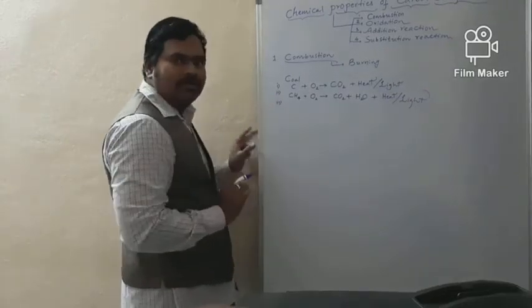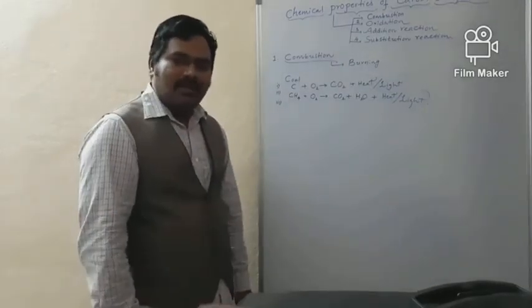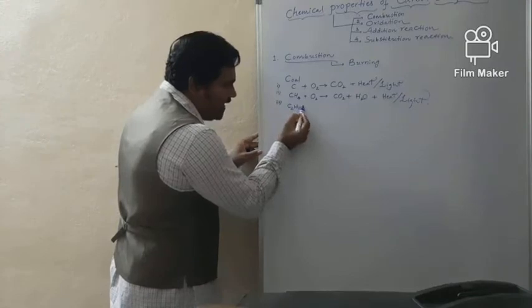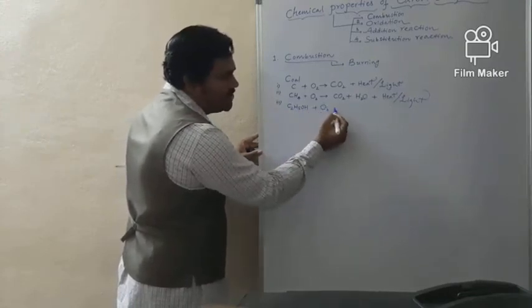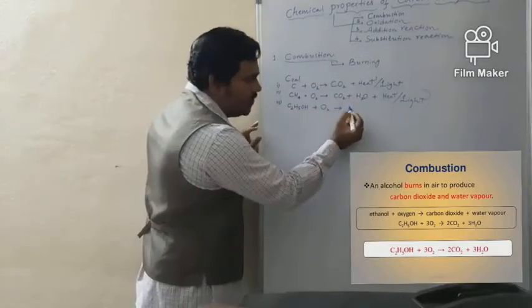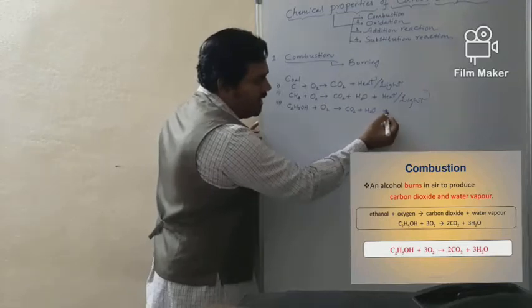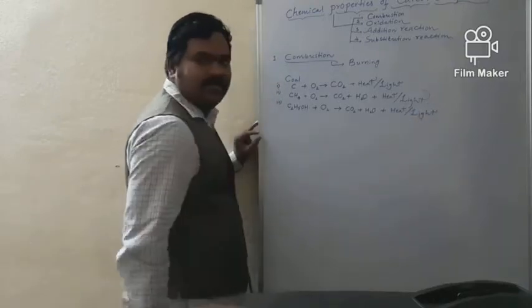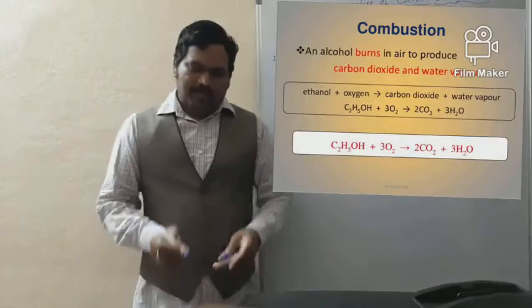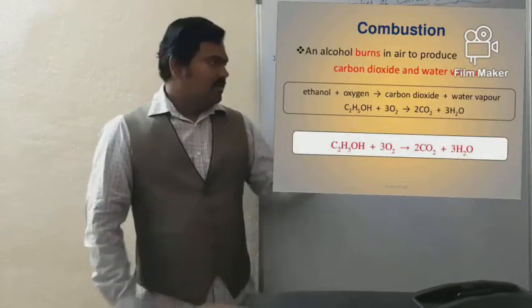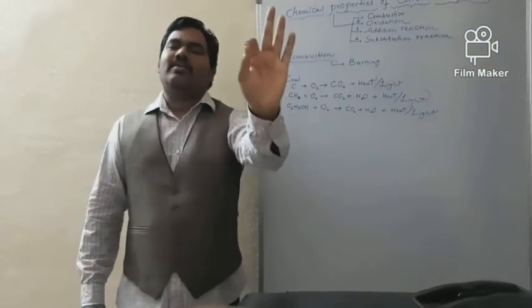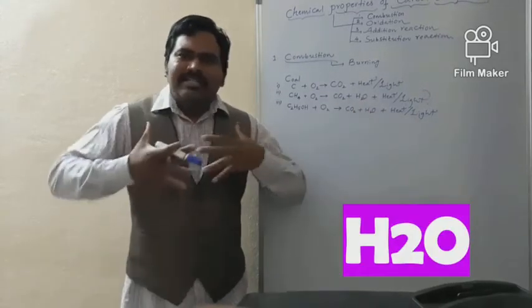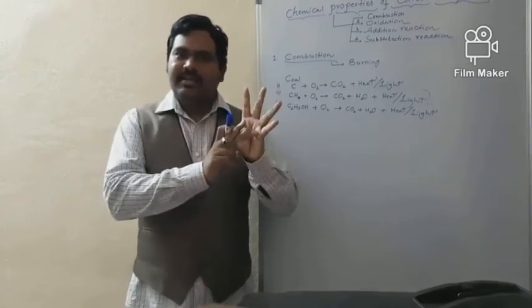Similarly, ethanol (C₂H₅OH), one of the main members of the alcohol family, also undergoes combustion in the presence of oxygen to produce carbon dioxide and water vapor, along with heat energy and light energy. In all three examples, the main product of combustion is carbon dioxide, the by-product is water vapor, and the purpose served is heat energy and light energy.